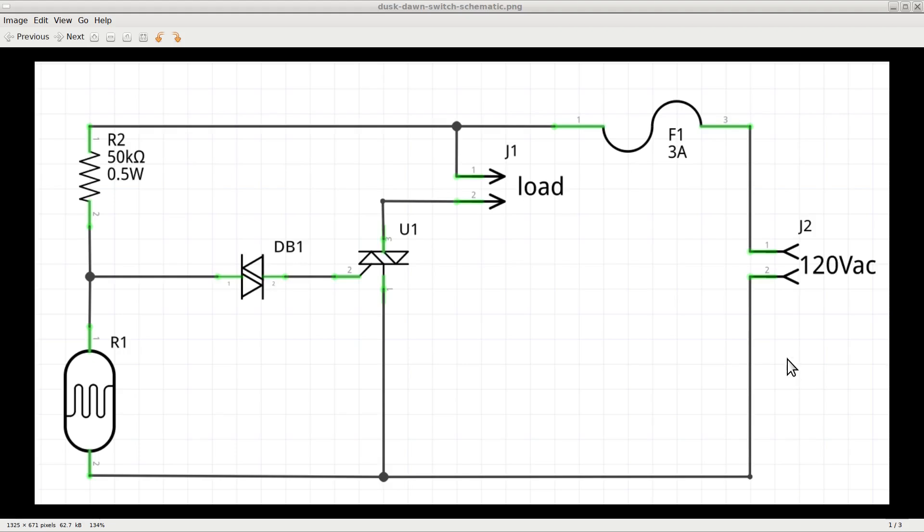The load is basically made of the LED lamps we want to control. The 120V AC input goes directly through a protection fuse and to the series of a 50K resistor and a photoresistor, which is the sensor that will detect the daylight condition to turn the light bulbs on and off.